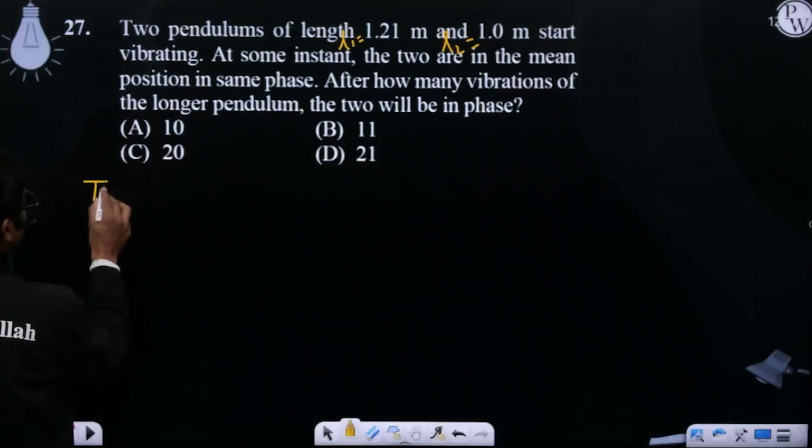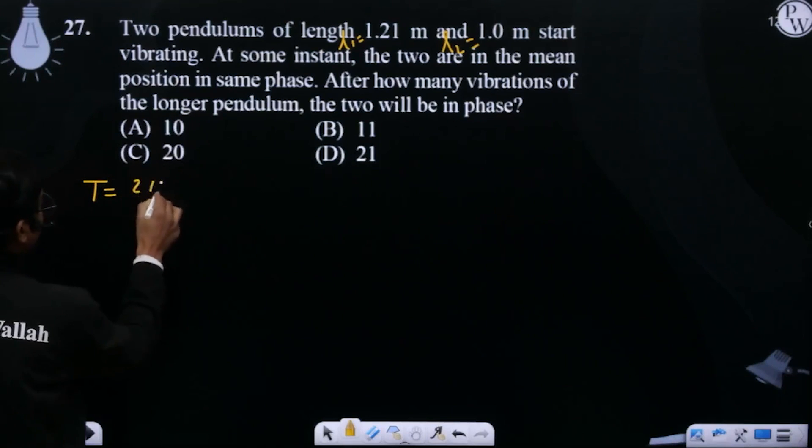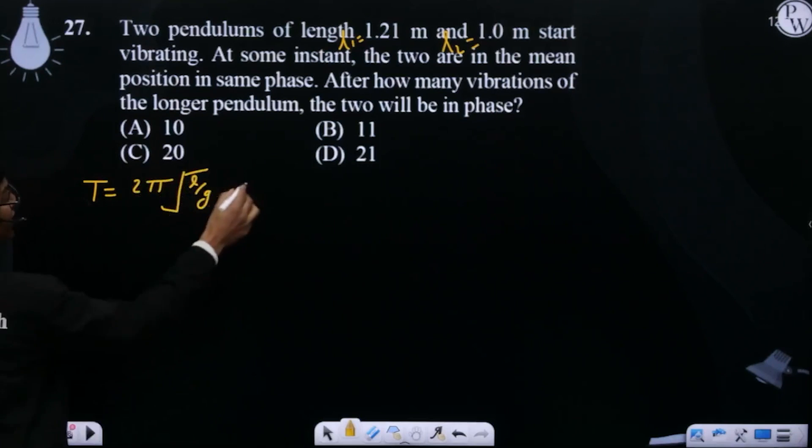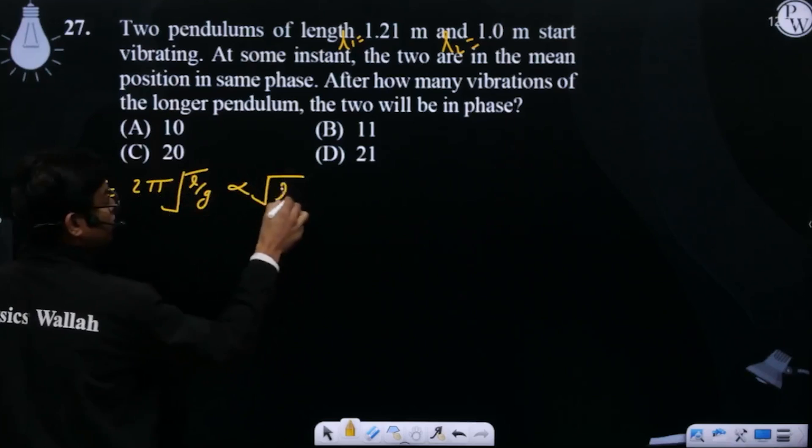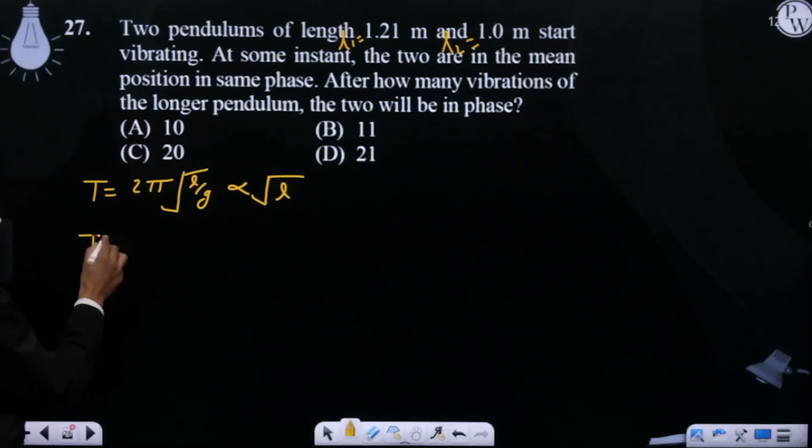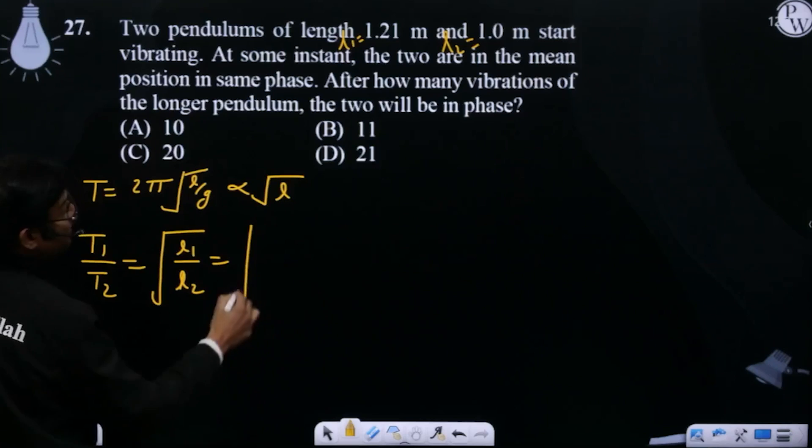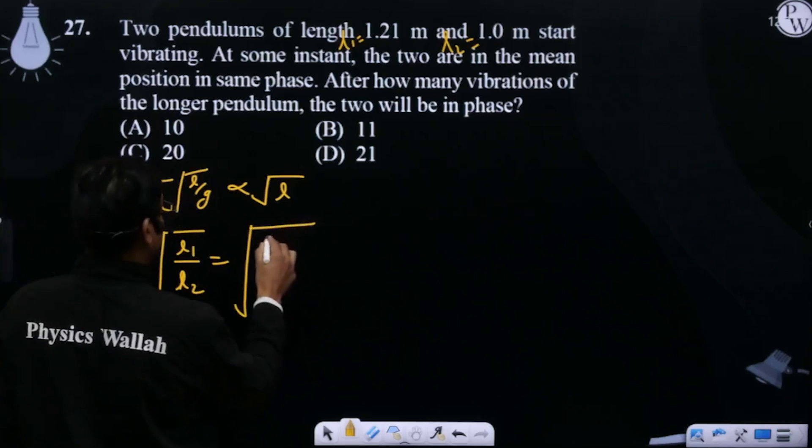The time period formula is T = 2π√(L/g). Here length changes but g does not change, so it's directly proportional to √L. Therefore, T1/T2 = √(L1/L2). L1 is given as 1.21 and L2 is 1.0.